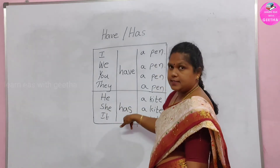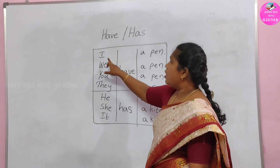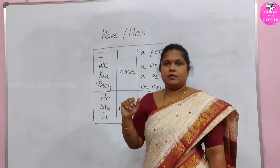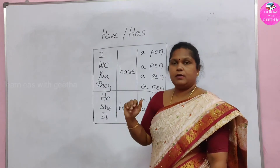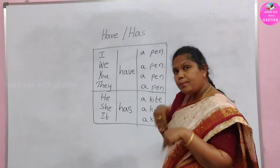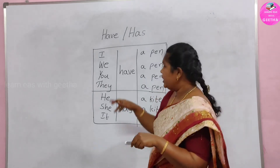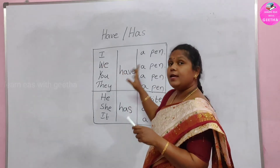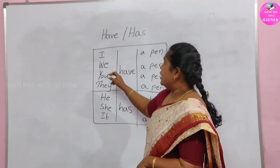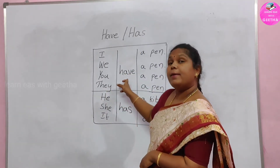She has. He has. When do we use have? For I, we, you, they. I have. You have. They have. We have. I have a car. You have a bungalow. We have kites. They have bicycles.